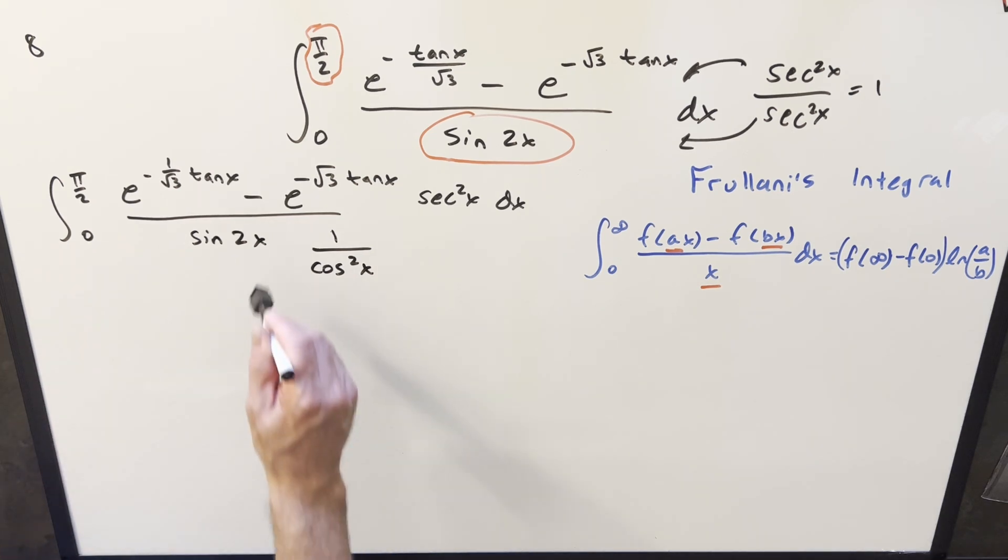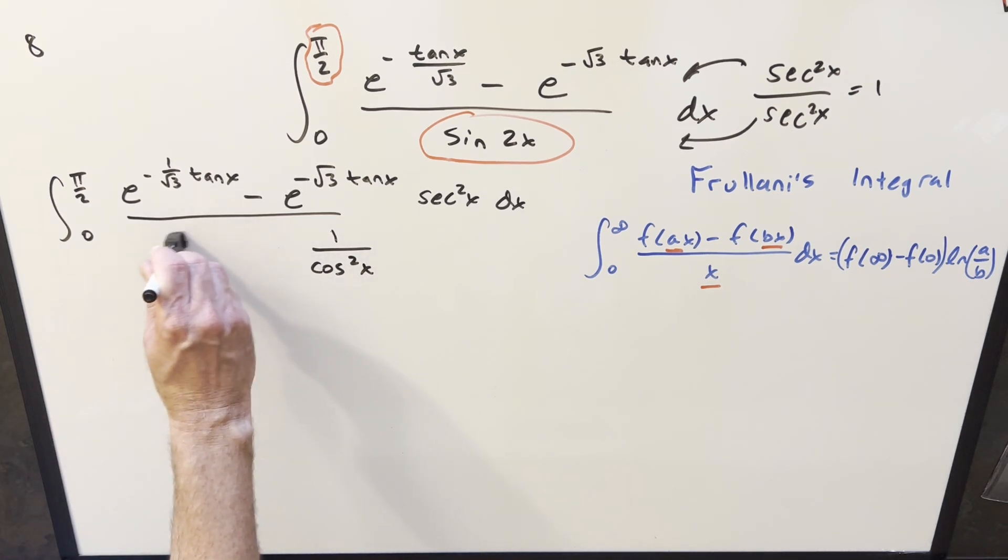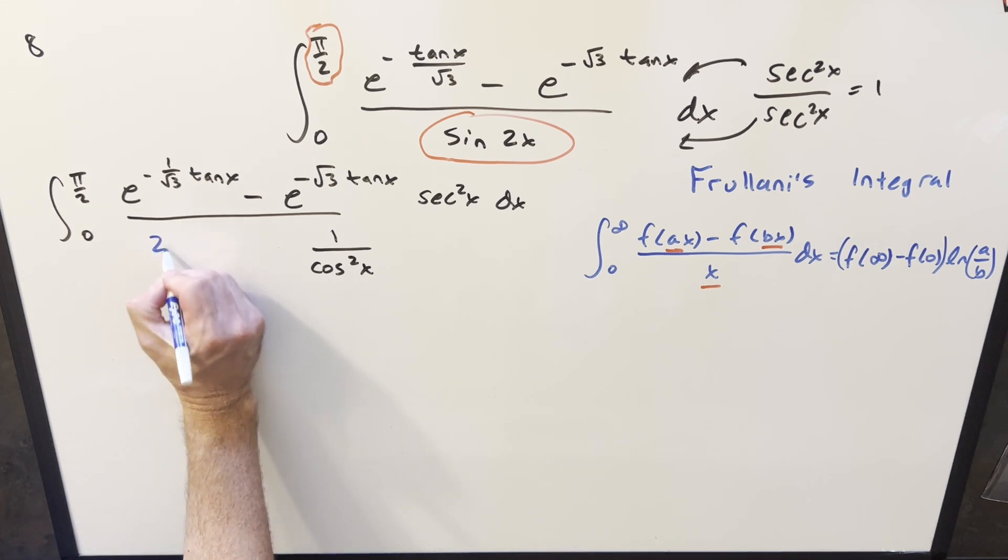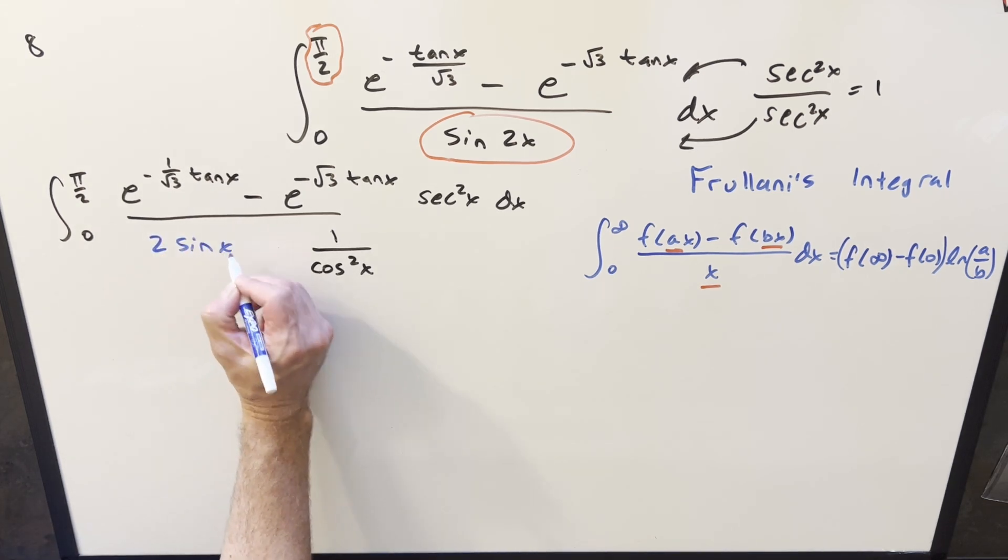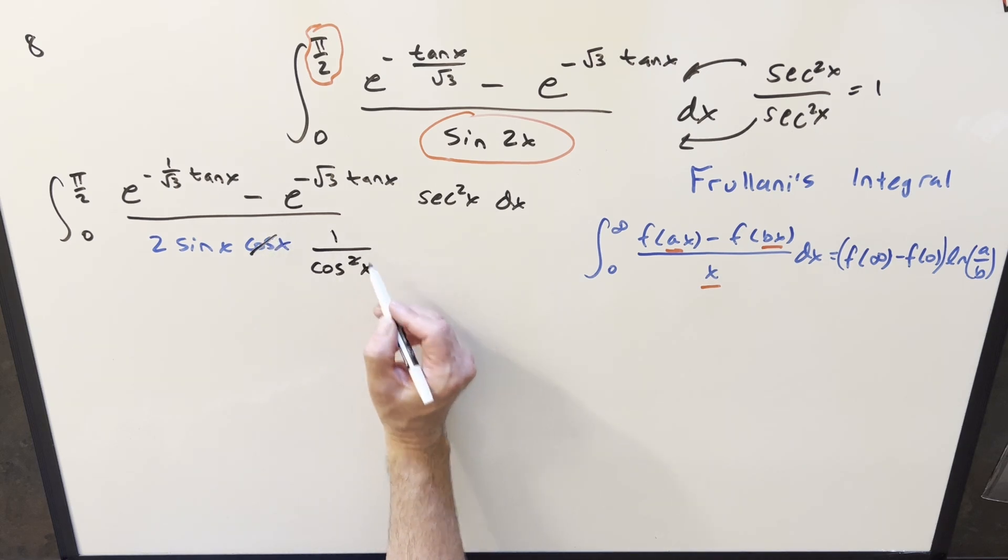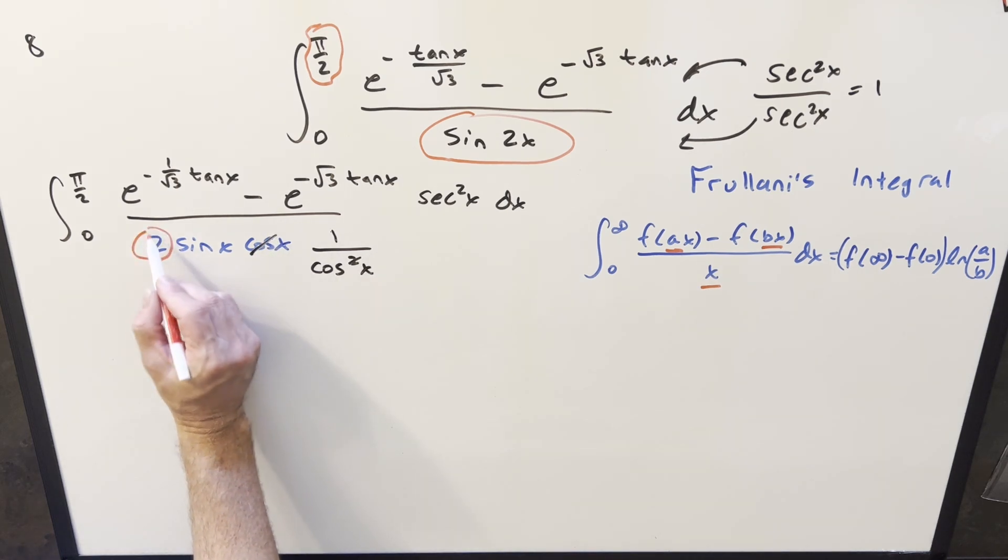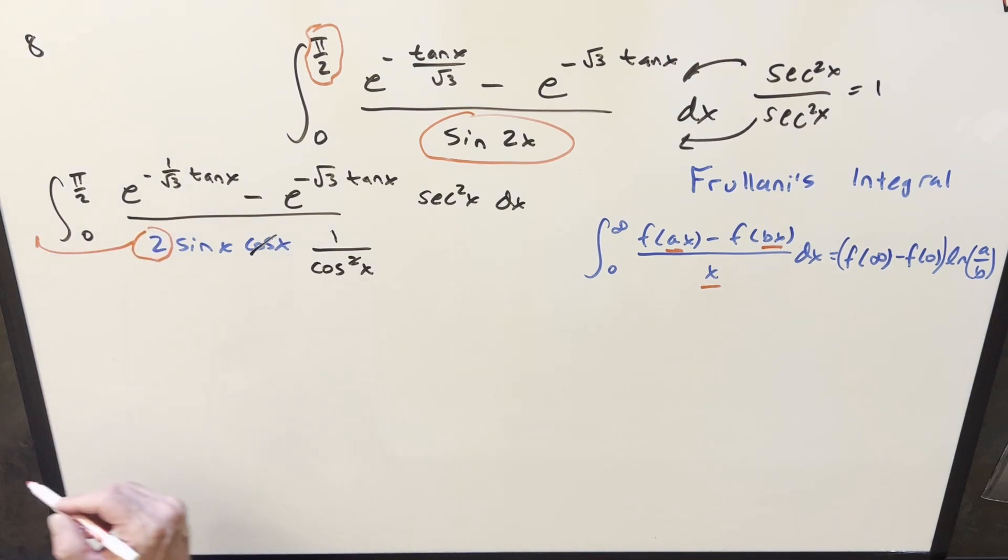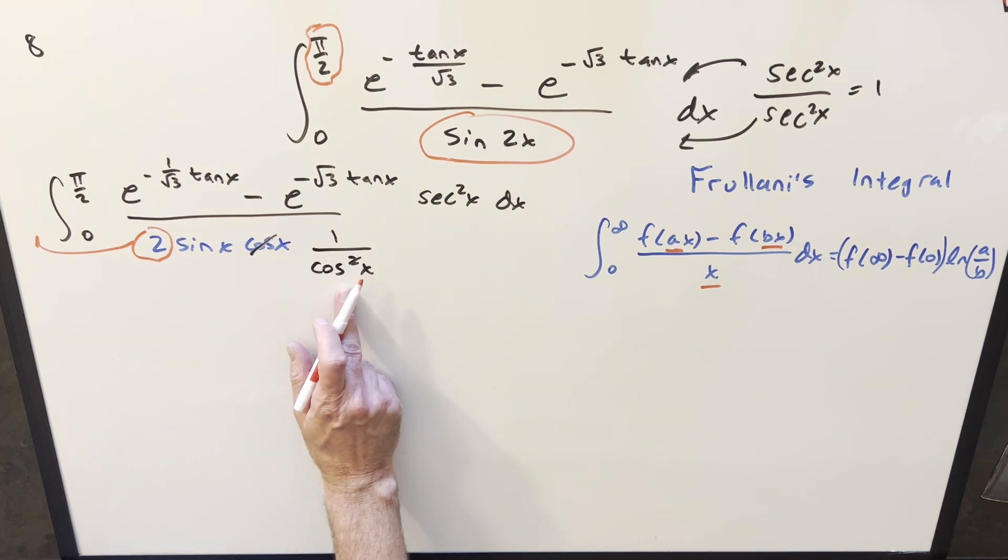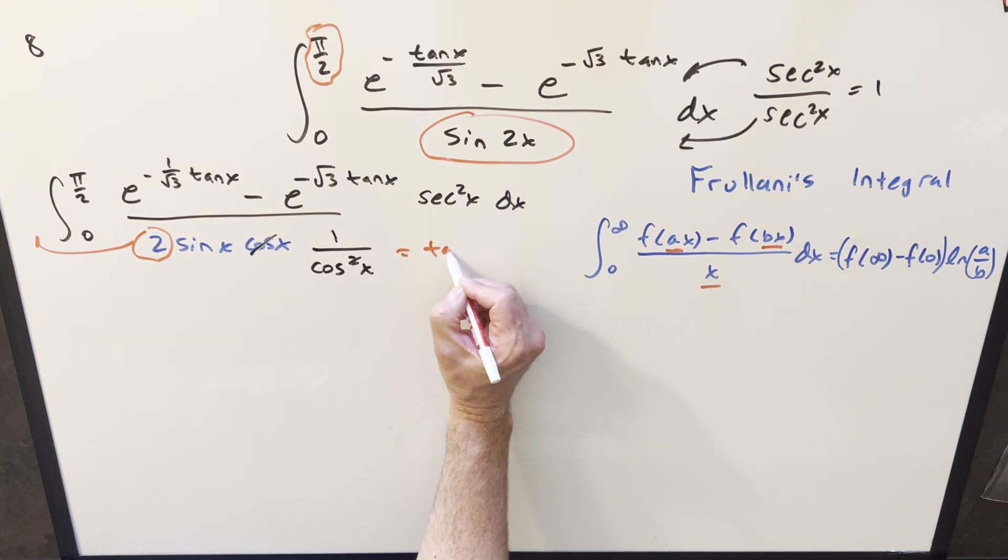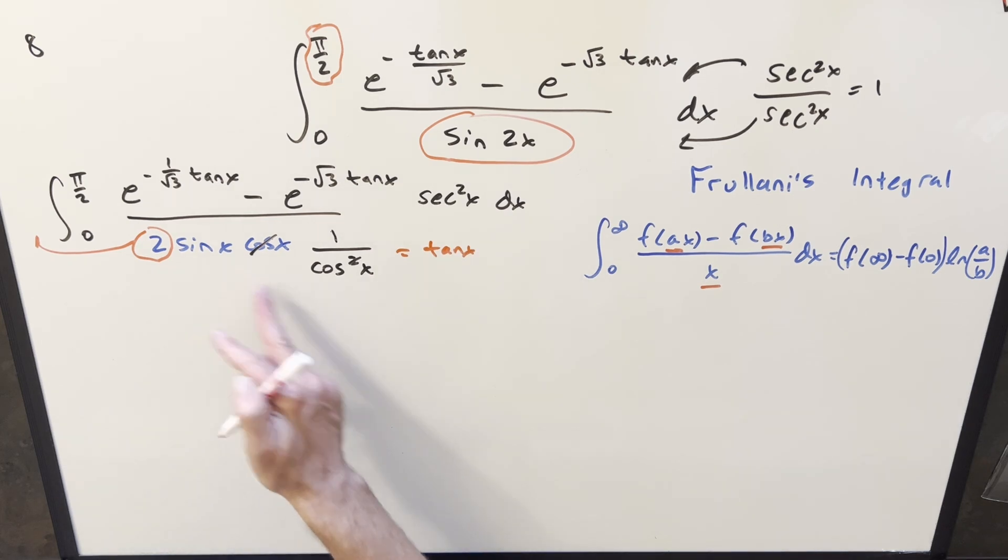And then on the sine 2x, let's use the double angle formula and write it that way. So this will become 2 sine x over cosine x. Then I can cancel 1 cosine with 1 of these. I can take this 2 and we can bring this up front here as 1 half and put the sine x and the cosine x together. Doing that, this is just going to become tan x when we just put those together.